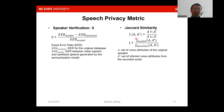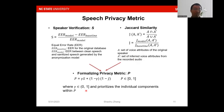Next, we measure the similarity between voice attributes using Jaccard similarity. Here, A is the set of voice attributes of the original speaker, and A' is the set of voice attributes from the anonymized audio. To combine speaker verification and Jaccard similarity, we introduce a new parameter gamma, in the range of 0 to 1. Gamma balances the individual components of speaker verification and Jaccard similarity. We compute the privacy matrix P, which is also in the range of 0 and 1.